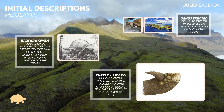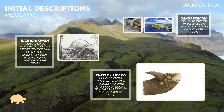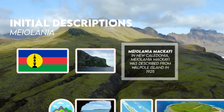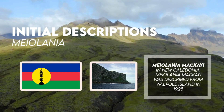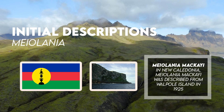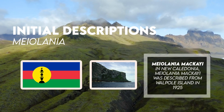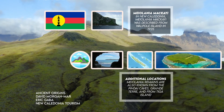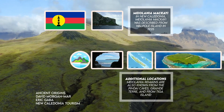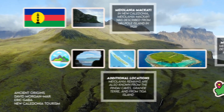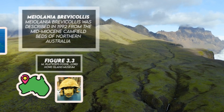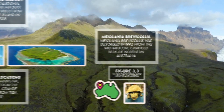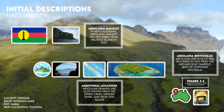In New Caledonia, Myolania makagi was described from Walpole Island in 1925. It was smaller and less robust than Myolania platyceps. Myolania remains are also known from the Pindai Caves, Granatera, and from Taiga Island. Myolania rabicollis was described in 1992 from the Mid-Miocene Canfield beds of northern Australia, and differed from Myolania platyceps in having a flatter skull and other horn proportions.